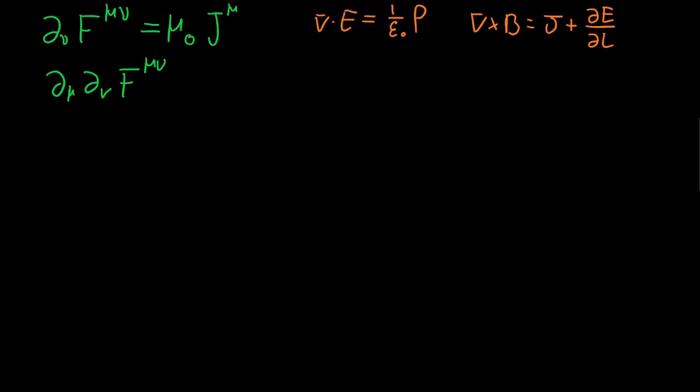So for starters we can switch the partial derivatives around so that's going to be equal to partial nu partial mu of f mu nu and then through the anti-symmetry of the field tensor that is just going to be equal to negative partial nu partial mu of f mu nu.